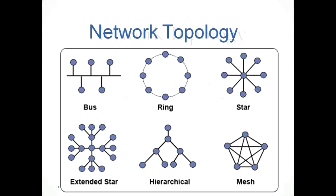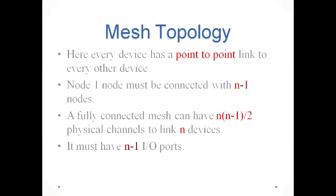In mesh topology, every device has a point-to-point link to every other device. Each node must be connected with n minus 1 nodes, so all nodes are connected with all other nodes. A fully connected mesh can have n(n-1)/2 physical channels to link n devices.